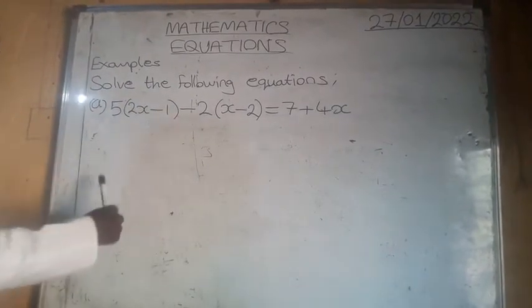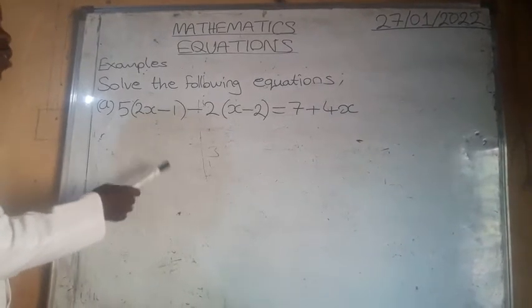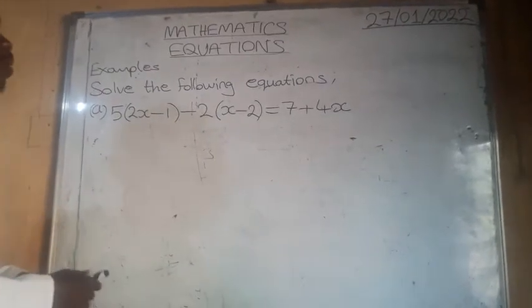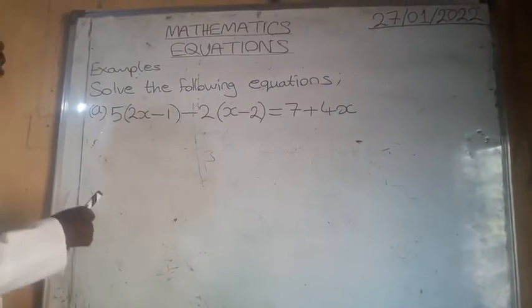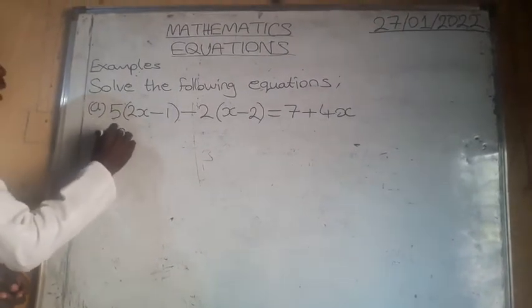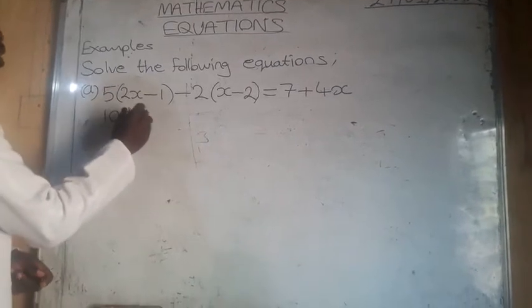Now in this equation, if they ask you to find the value of x, first of all you have to remove the brackets by distributing 5. So 5 multiplied by 2x is 10x. Then 5 multiplied by negative 1 is negative 5.